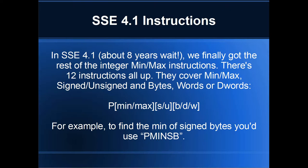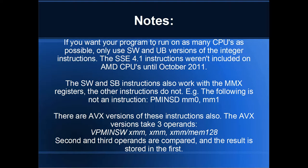A few notes: if you want your program to run on as many CPUs as possible and you're comparing integers, you should only use the SW and UB versions, since those were the original ones included with SSE 1. SSE 4.1 instructions weren't included on AMD CPUs until October 2011 — from the Bulldozer architecture onward. So if you use the newer integer comparison instructions, your program won't run on older AMD CPUs, though that's still quite a few years back now.